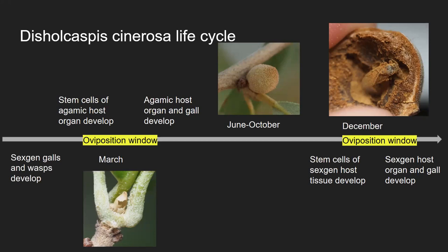No one has found it yet. We have a pretty strong hypothesis that this should exist. These Disholcaspis sexual generation galls are on the brand new growth of white oaks — it happened here at the end of March; for you in Massachusetts it should be around now. If you go out and look for these, they're very thin and very fragile. Any plant with a lot of bullet galls — Disholcaspis quercusglobulus or Disholcaspis quercusmamma — should have these sexual generation galls. We don't know for sure that they exist; we've hypothesized that they exist, and it would be great to get somebody out there to find these and prove it.